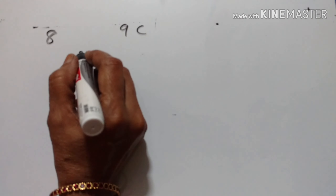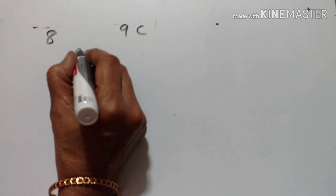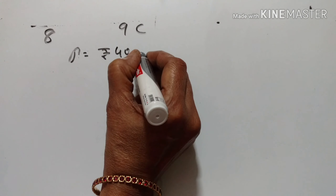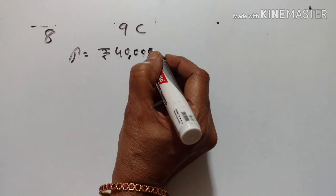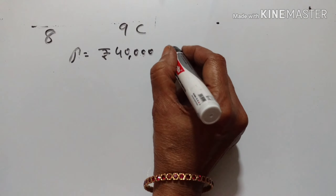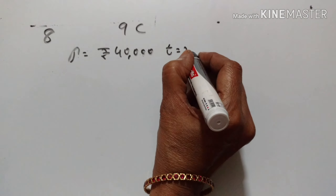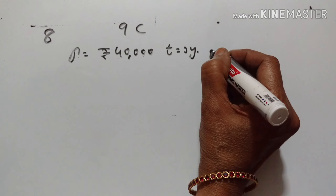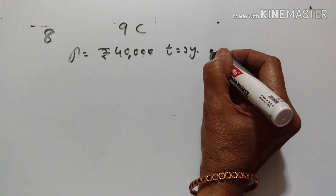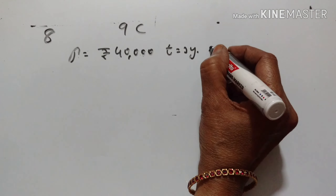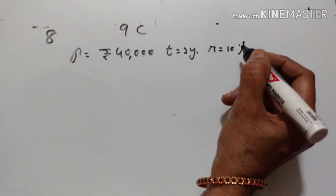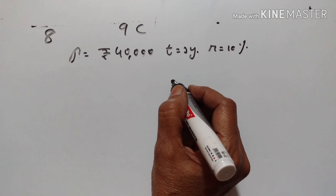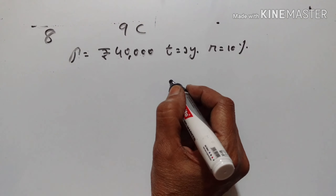Rekha borrowed Rs. 40,000. P is equal to Rs. 40,000 for 3 years. Time is equal to 3 years at 10% per annum compound interest. Rate is equal to 10%. Calculate the interest paid by her for the second year.